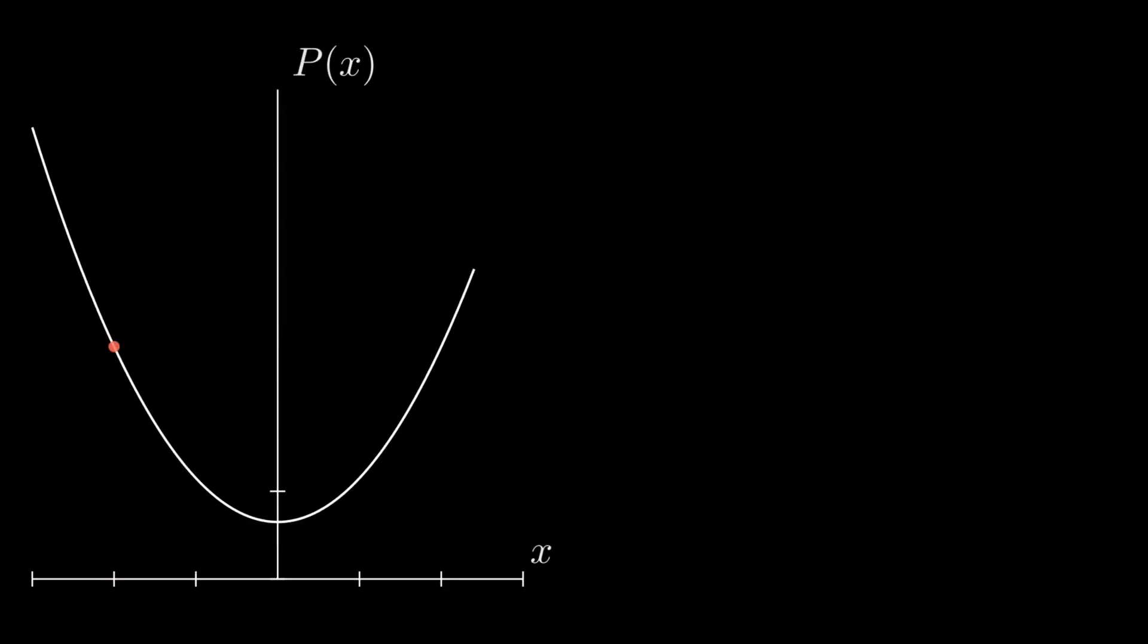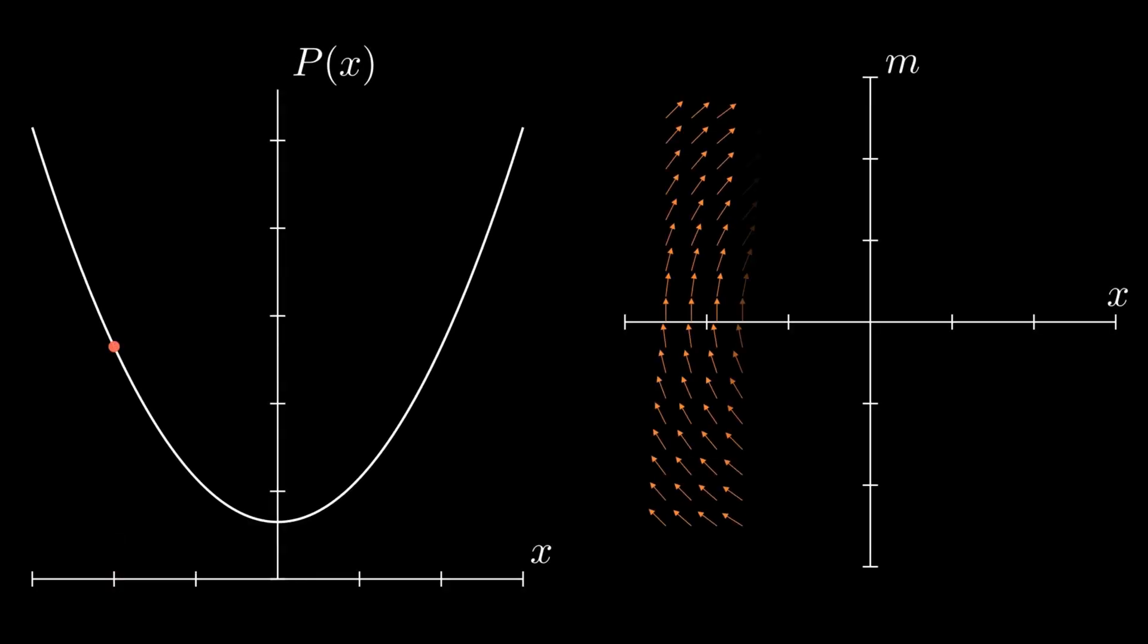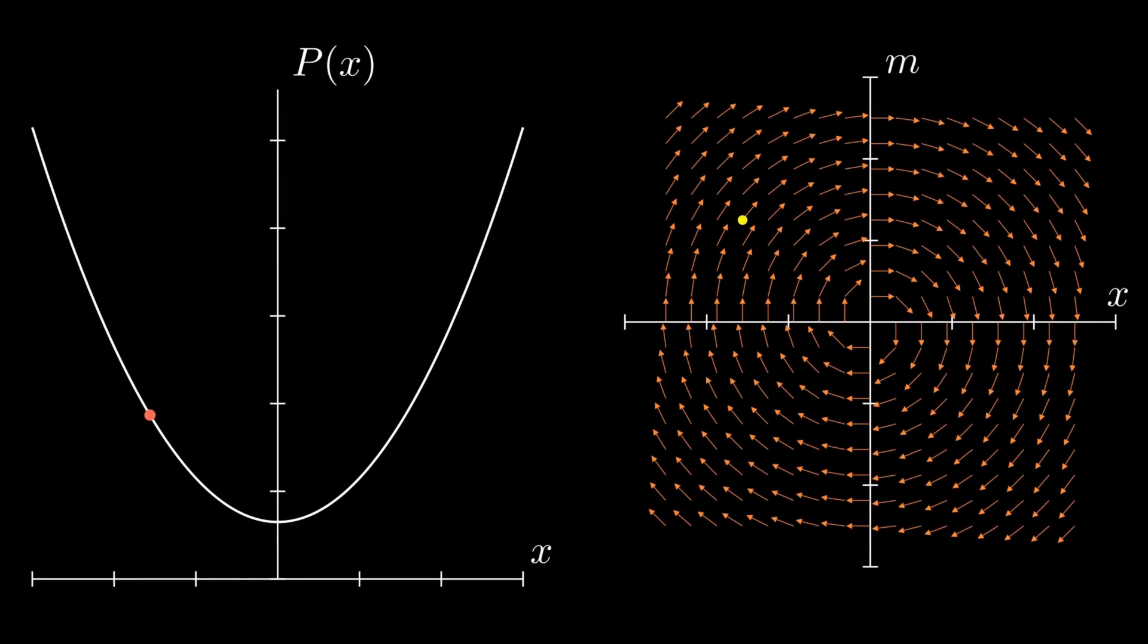In this animation, we can see how the ball's motion on the left corresponds to its trajectory in phase space on the right. When x is equal to 0, the potential energy is at its minimum, while the momentum, and thus the kinetic energy, is at its maximum. At the extreme positions on either side, the momentum drops to 0 and then flips sign. Negative momentum pulls the ball to the left, while positive momentum pushes it to the right.